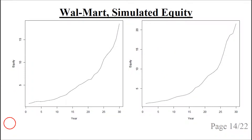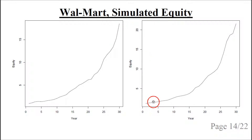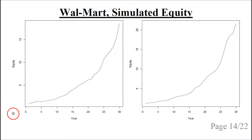Now let's look at the Monte Carlo simulated equity using this data. It is normalized to start at 1. In the first simulation it grows roughly exponentially up to maybe 18, and in the second simulation it goes up to maybe 21 or 22. These are quite stable, which has to do with the stability of Walmart's data.